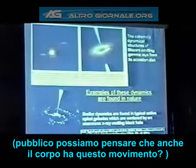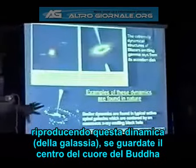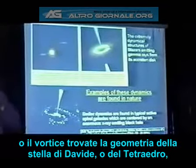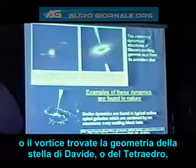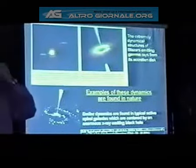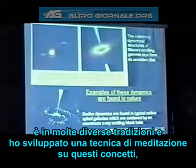Can we imagine that our bodies have that same type of double torus Coriolis energy pattern around us? Yes. I think that's why the Buddhist tradition shows a vortex entering at the crown chakra and at the root of the spine, meeting in the heart center — reproducing that very dynamic. At the heart center of the Buddha, where the vortex meets, you find the geometry of the Star of David, or the double star tetrahedron — the geometry of the vacuum, the singularity. It's present in many different traditions.